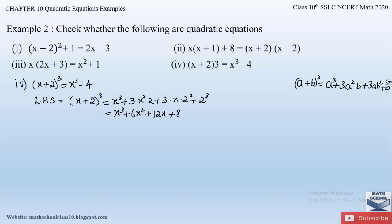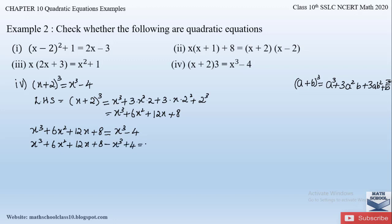Equating left-hand side with right-hand side: x³ + 6x² + 12x + 8 = x³ − 4. Sending the right-hand side to the left: x³ + 6x² + 12x + 8 − x³ + 4 = 0. The x³ and −x³ terms cancel out.